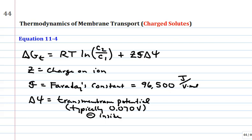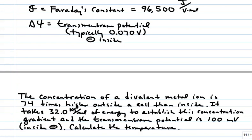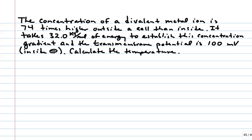Well let's work a problem. And I've got one written out here. You probably don't have this written down yet. So you can stop the video and write this out. So again you've got to read these questions closely because there's a lot of information given to you. So the concentration of a divalent metal ion is 74 times higher outside a cell than inside. It takes 32 kilojoules per mole of energy to establish this concentration gradient and the transmembrane potential. Let's just say it's 100 millivolts this time. Of course inside negative. Calculate the temperature.